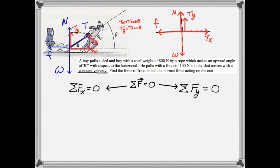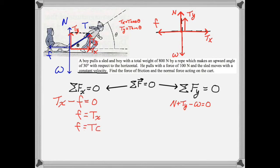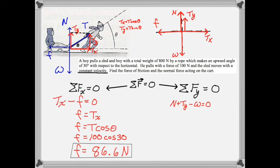Now for the all-important force equations. Horizontally, we have the x component of the tension as a positive force and the friction as a negative force. To solve for the friction, we'll move to the x equations and solve for f. Using the trigonometric relations we found above, we can substitute t cosine theta for tx. Then we just plug in the numbers, calculate, and we find that the force of friction is 86.6 newtons.